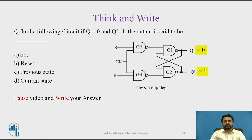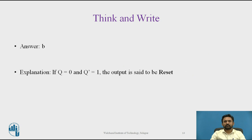In the following circuit, if Q equals 0 and Q-complement equals 1, the output is said to be — choices are given. Pause your video and write the answer. The answer is B: if Q equals 0 and Q-complement equals 1, the output is said to be reset.